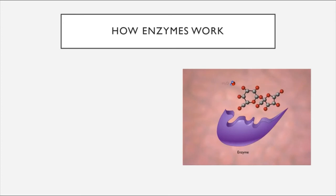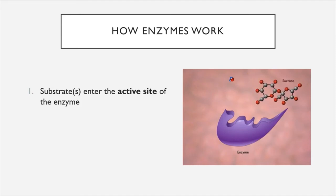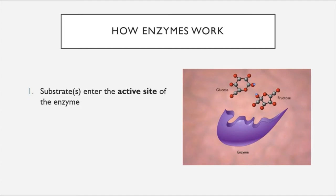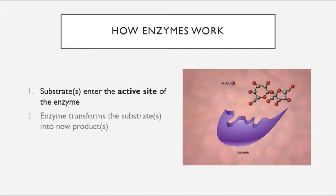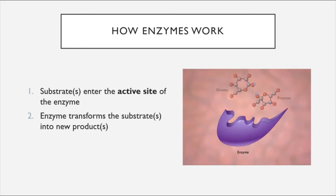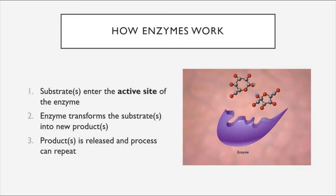Returning to the animation: the substrate sucrose enters the active site of the enzyme—the pocket tailor-made for a specific substrate. Once inside, the enzyme transforms the substrate into new products: in this case, glucose and fructose. After this process occurs, the enzyme returns to its original state so the process can repeat over and over again. The enzyme can catalyze this same exact reaction repeatedly—enzymes are reusable in that way.